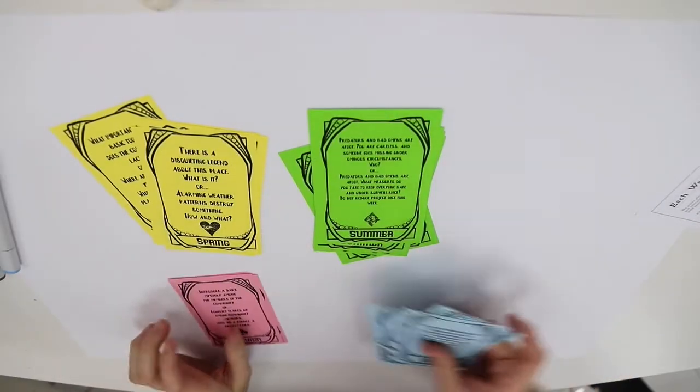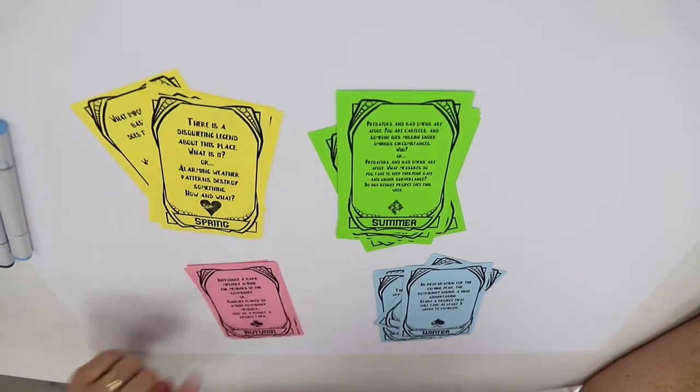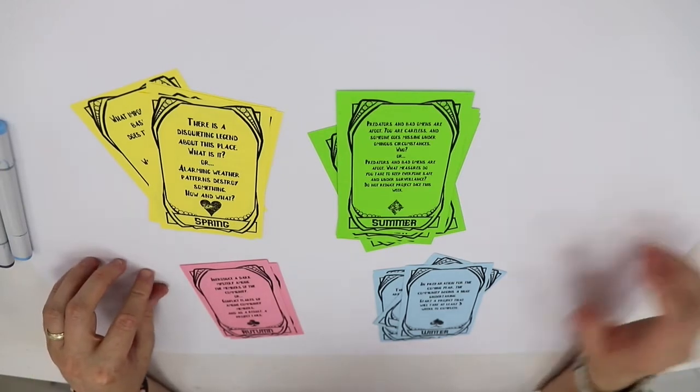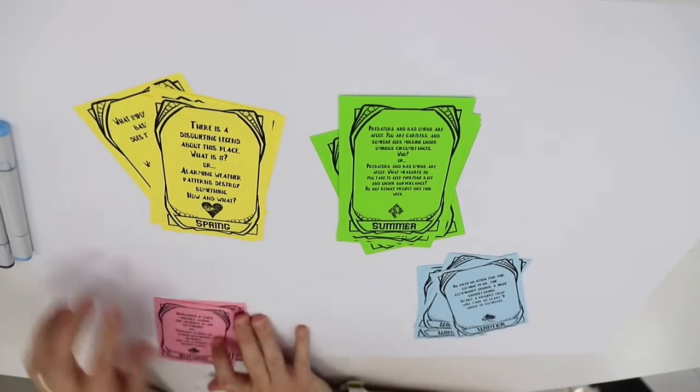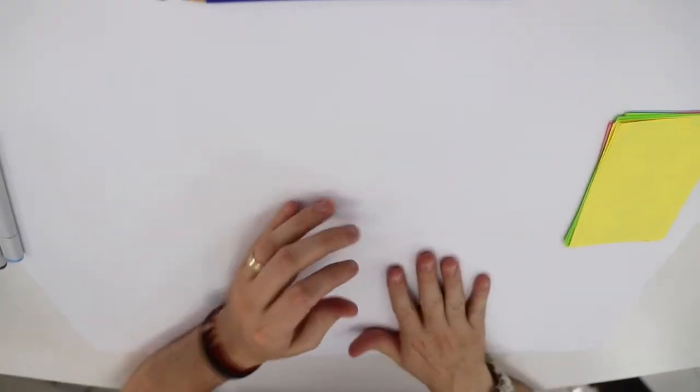First thing you're going to do is separate the cards into each of their piles - we have yellow for spring, green for summer, pink for autumn and then blue for winter. We're just going to simply shuffle some of these cards up and I'm just going to leave those to the side.